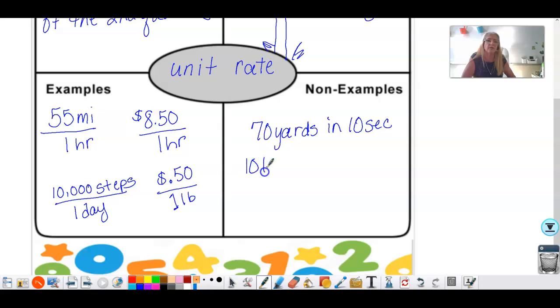Or if say, for example, you can get 10 pounds of potatoes and it's going to cost you $2.75. That is not a unit rate because the second number is not one.